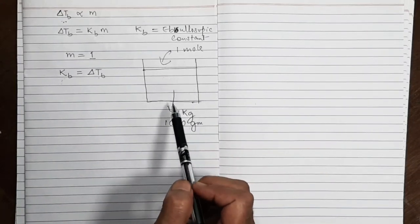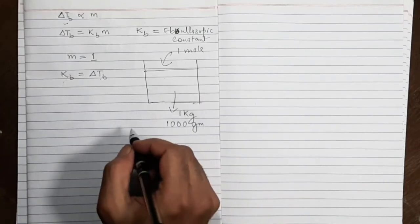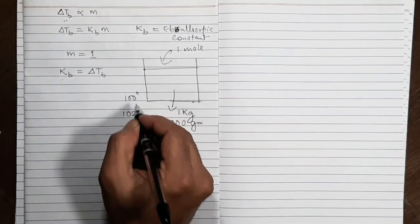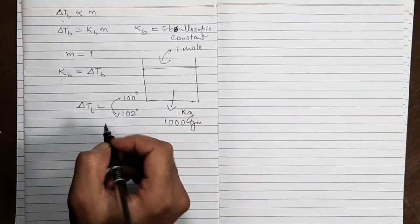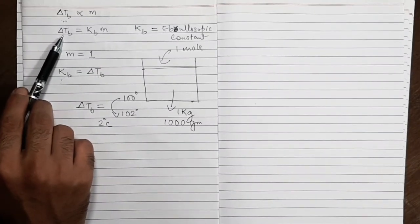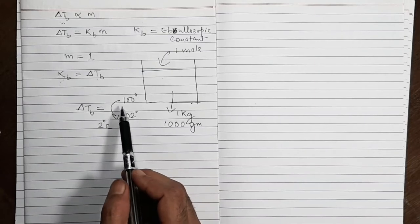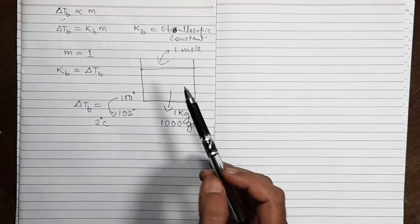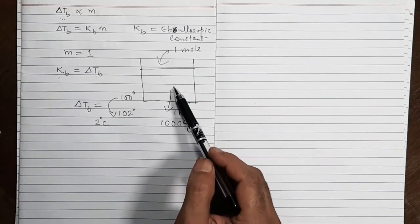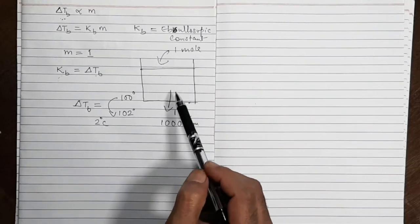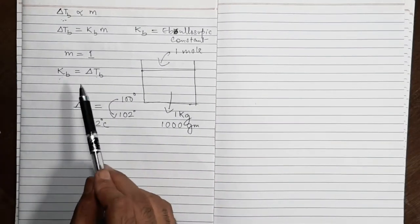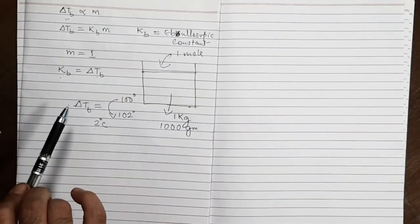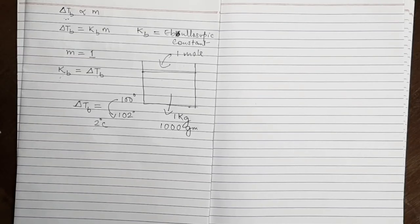The ebuloscopic constant equals the increase in boiling point of water when you add some impurity and prepare a solution of molality one. For example, if the boiling point rises by 2°C, the new boiling point of the solution is 102°C. Pure water boils at 100°C, so delta Tb equals 2°C. Note that delta Tb is not the boiling point of the solution or the pure liquid — it is the rise in boiling point, the amount by which it increases.